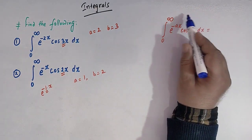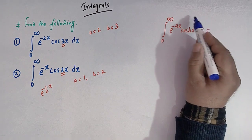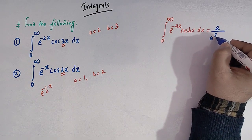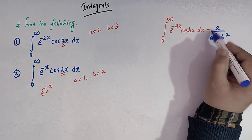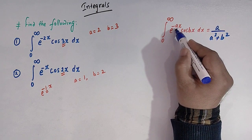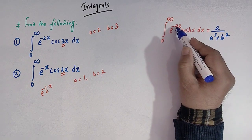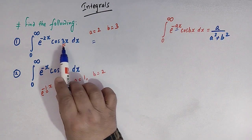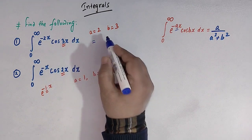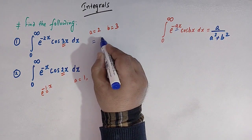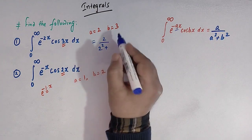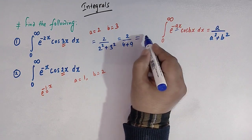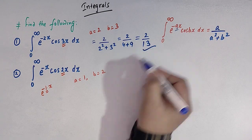When we have an integral of this type, the direct value can be written as a divided by a squared plus b squared. Applying this formula to the first integral: a is 2, so we get 2 over 2 squared plus 3 squared, which is 2 over 4 plus 9, that is 2 over 13.